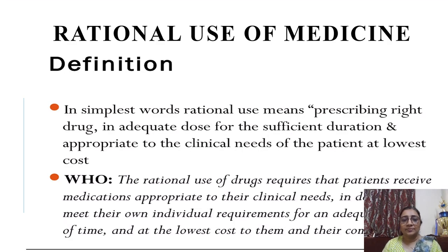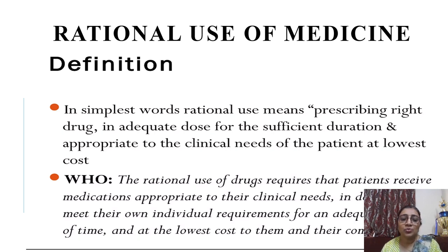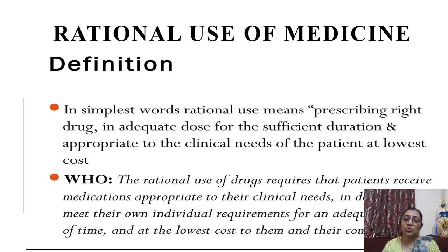Rational use of medicine is defined in simple words as: right prescription, right dose, right duration, and right patient at the lowest cost. According to the WHO, rational use of drugs requires that the patient receives medication appropriate to their clinical need, in proper doses meeting their individual requirements, for an adequate duration, and at the lowest cost to them.